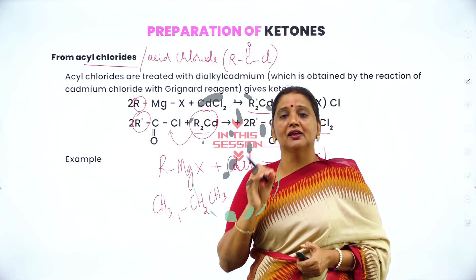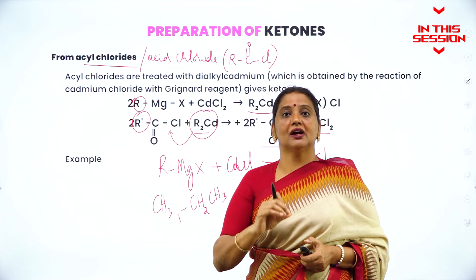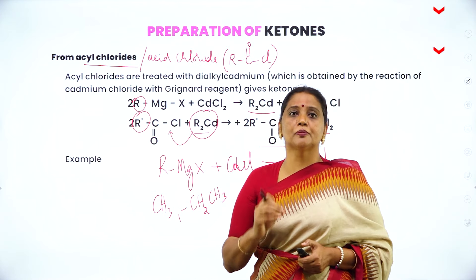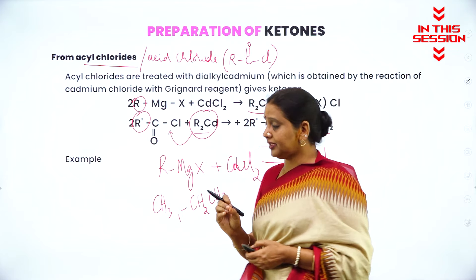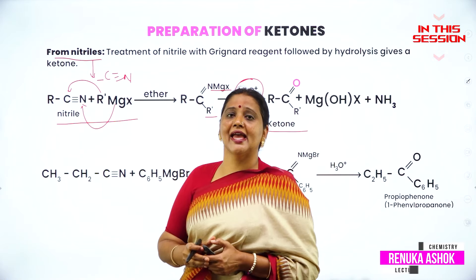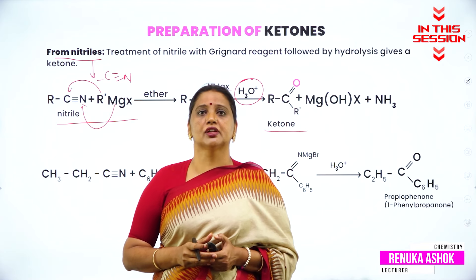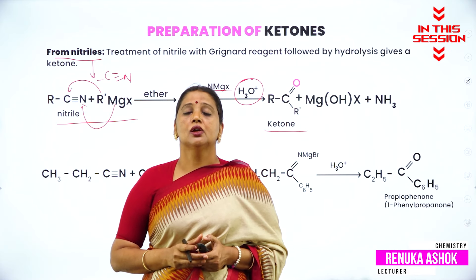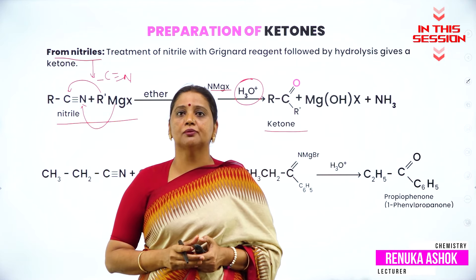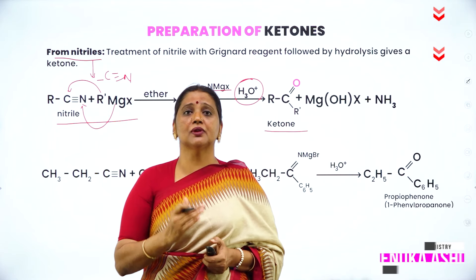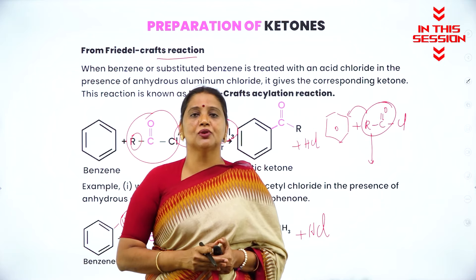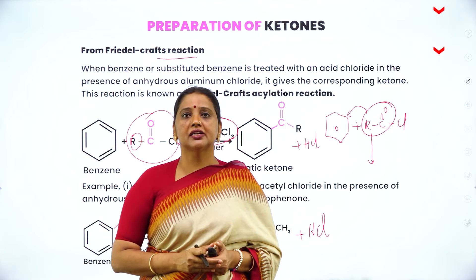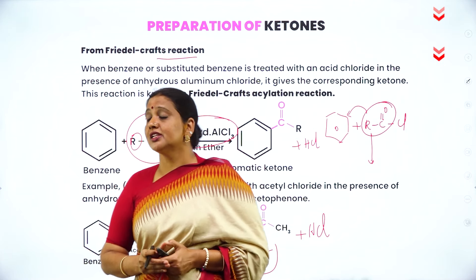If you want to create an example, in place of R, R1, R2, you put an alkyl group like methyl or ethyl. Ketones are prepared by the action of Grignard reagent on nitriles. The general formula of Grignard reagent is RMgX. The general formula of acid chloride is RC double bond O, Cl.